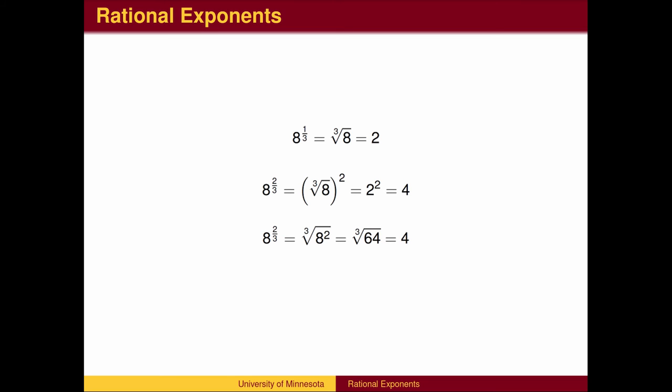If the numerator of the exponent is not 1, we raise the root to that power. For example, 8 to the 2 thirds power can be thought of as a two-step process. First, taking the cube root, then squaring to get the final answer. The order can be reversed.